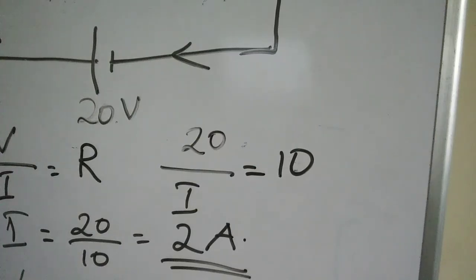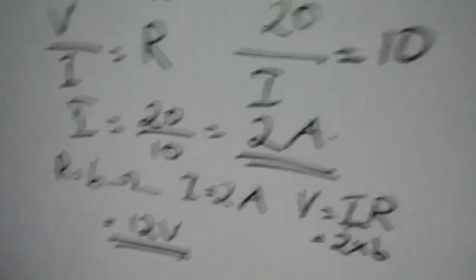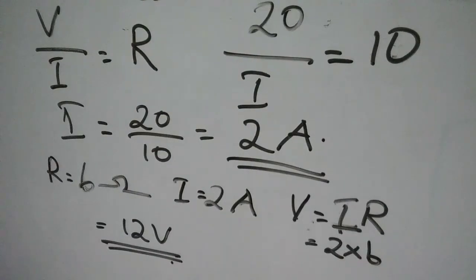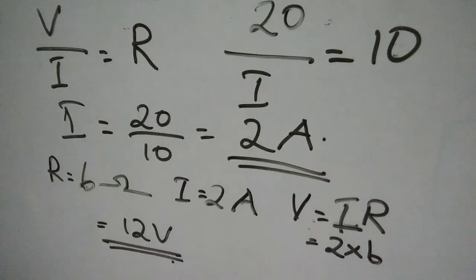This is how we can solve these kinds of problems. When you get such a problem, first draw the diagram, then apply the formulas, and understand whether it is series or parallel. If it is series, the current remains the same and potential difference only varies. The parallel case we can discuss in the next class. Thank you for watching, see you next time.